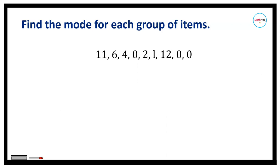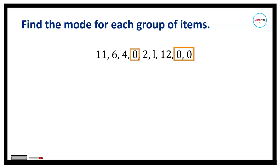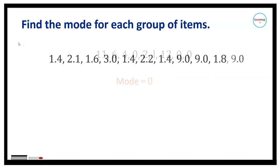For number two, let us consider the group of data: 11, 6, 4, 0, 2, 1, 12, 0, 0. Looking at the data entries, the value that appears most frequently is 0. Therefore, the mode here is equal to 0.